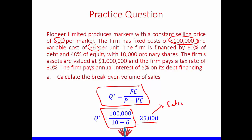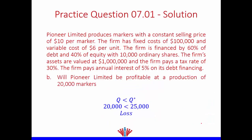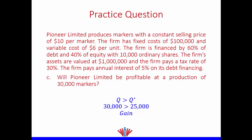This gives us 25,000 units — meaning sales equal total operating costs (fixed plus variable), so EBIT equals zero. That is our break-even point. At 20,000 markers, we are below the break-even point of 25,000, so we make a loss. At 30,000 markers, we are above the break-even point, so we make a gain.